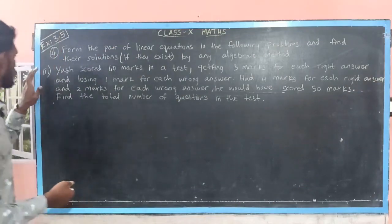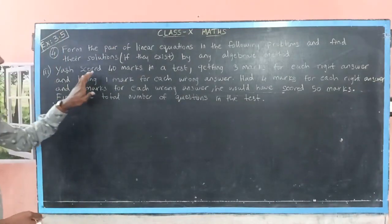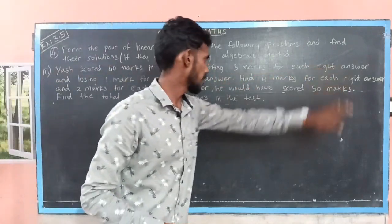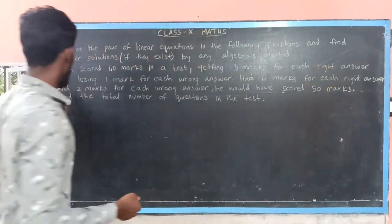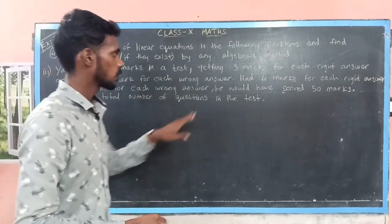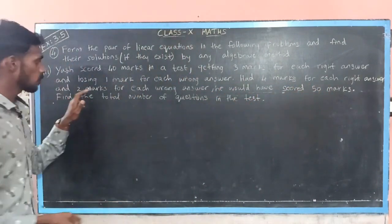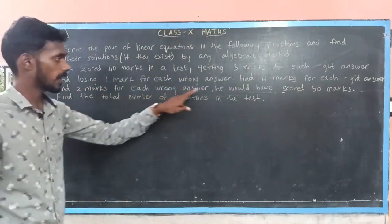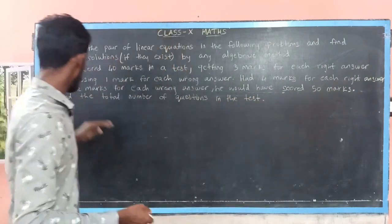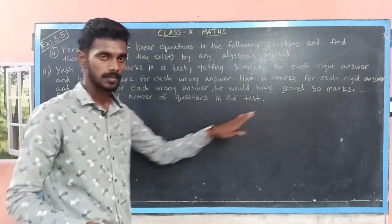Let's see the third subdivision. Yash scored 40 marks in a test, getting 3 marks for each right answer and losing 1 mark for each wrong answer. If he had 4 marks for each right answer and 2 marks for each wrong answer, he would have scored 50 marks. We have to find the total number of questions asked in the test.